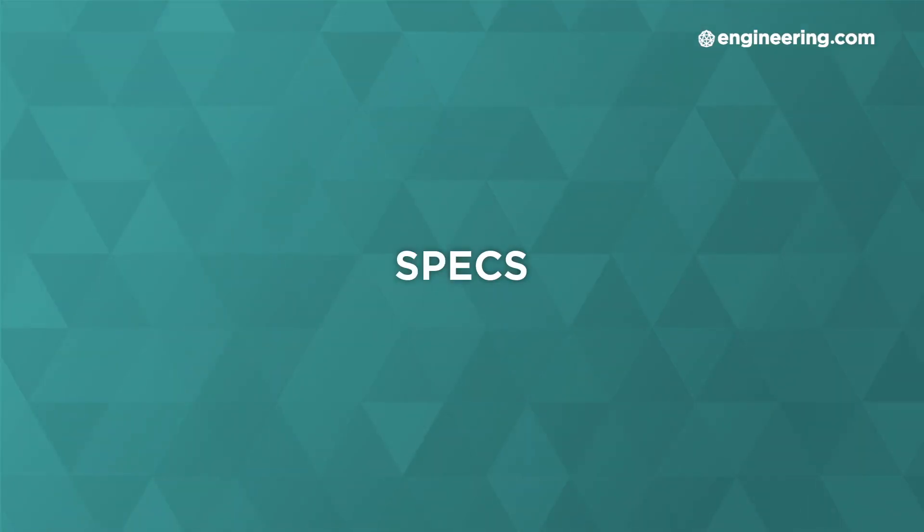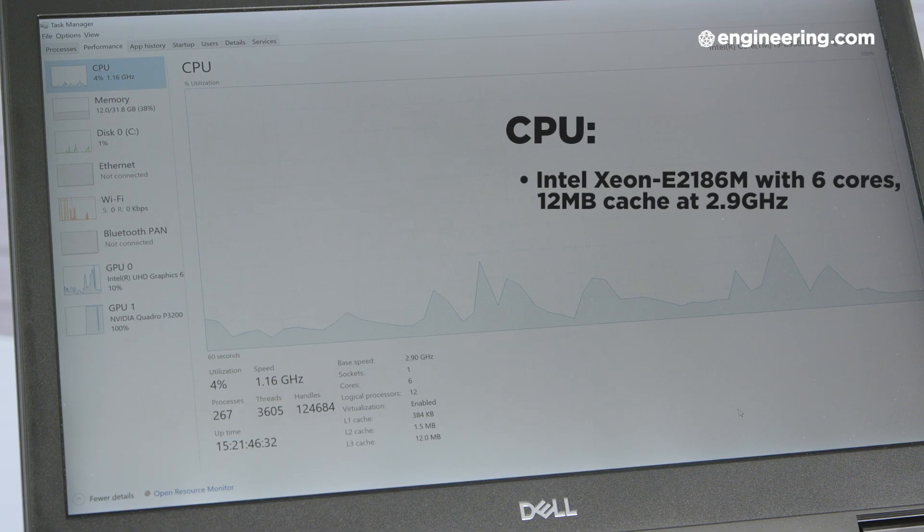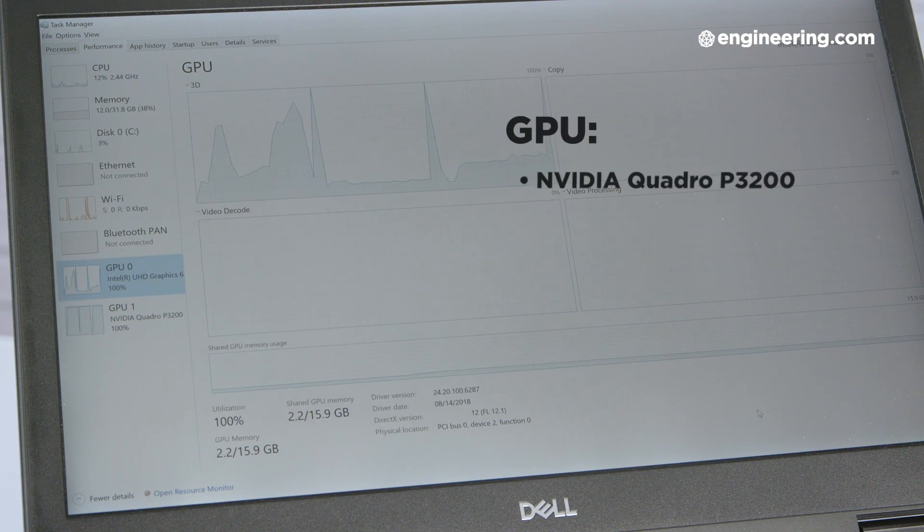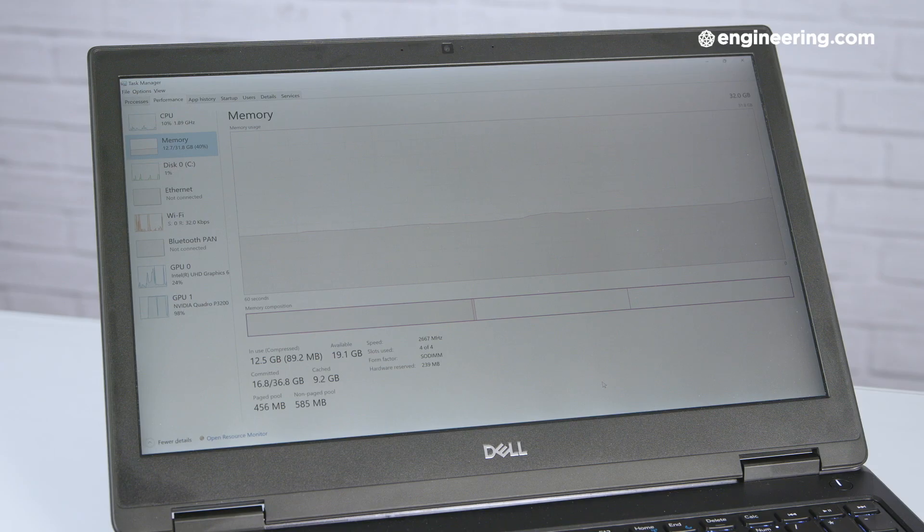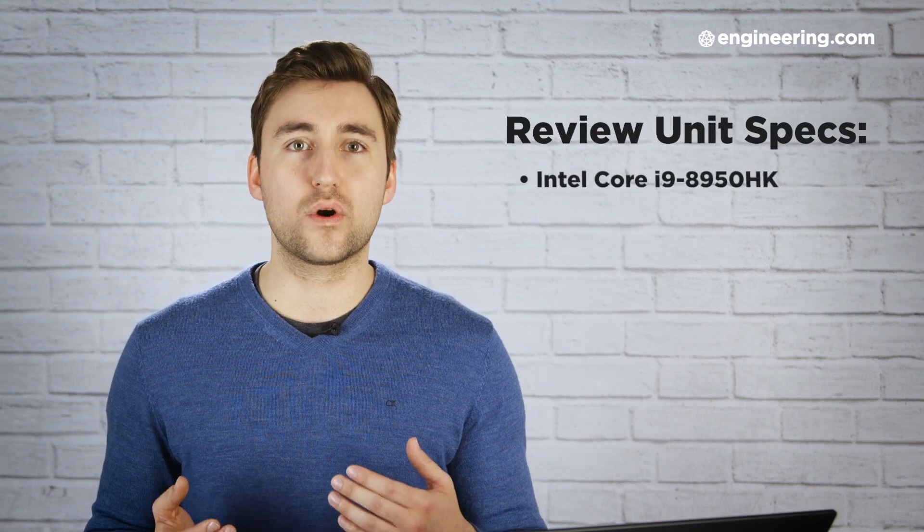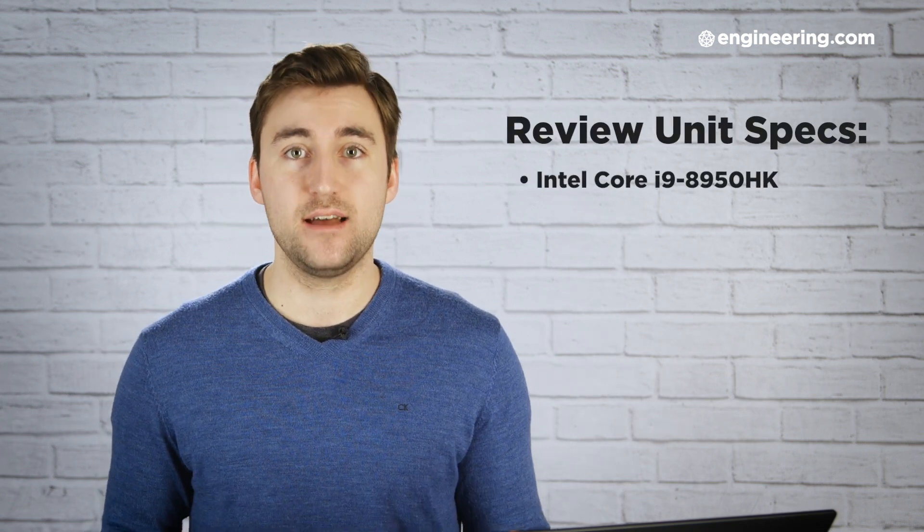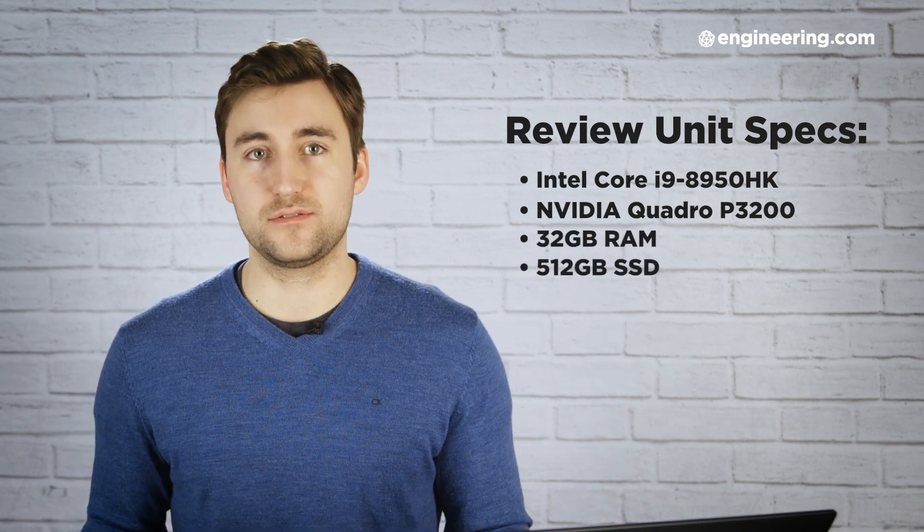The specs of the Precision 7530 are this laptop's best feature. The top CPU is an Intel Xeon E2186M with 6 cores, a 12 megabyte cache and a base clock speed of 2.9 GHz. The top GPU is an NVIDIA Quadro P3200 with 6 gigabytes of VRAM. The max memory is a dizzying 128 gigabytes, and the max storage capacity is a substantial 6 terabytes SSD. In our review unit, we had an Intel Core i9-8950HK, the Quadro P3200, 32 gigabytes of memory and 512 gigabytes of storage.